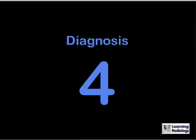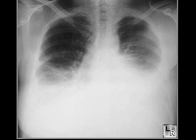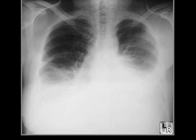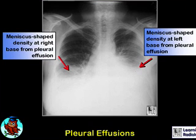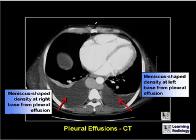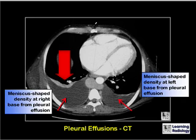This is Diagnosis 4. Why is this 57-year-old female short of breath? There are large bilateral pleural effusions, with a meniscus-shaped density at the right and left bases. In this case it was secondary to congestive heart failure. A CT scan of the chest shows bilateral effusions — again meniscus in shape, lower in density because they contain fluid, and there is compression atelectasis above the right pleural effusion.